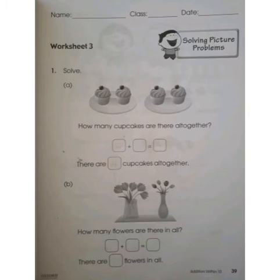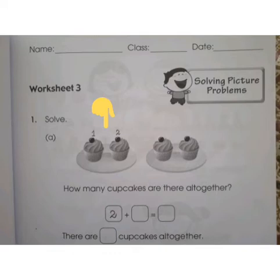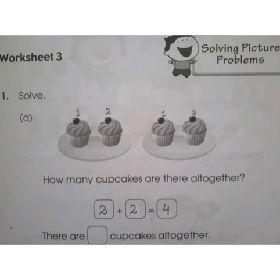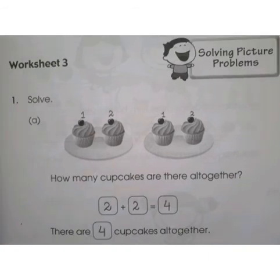How many cupcakes are there? Now start counting with me. First plate — count the cupcakes: one, two. Now count the cupcakes in the second plate: one, two. Two plus two is equal to four. There are four cupcakes altogether.